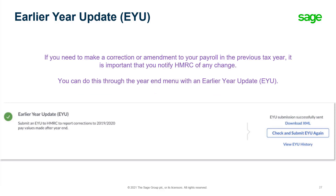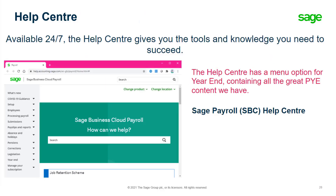If you need to make a correction or amendment to your payroll in the previous tax year, it is important to notify HMRC of any change. You can do this through the Year End menu with an Earlier Year Update. Don't forget that the in-app Help Centre is always available — simply click on Help at the top right of your screen wherever you are in the software.